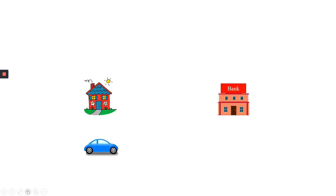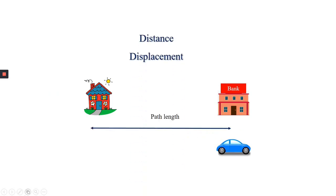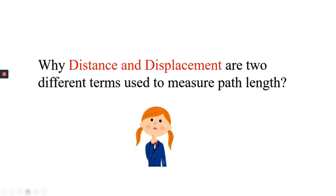In the motion of an object, distance and displacement are the measures of path length. But why? Distance and displacement are two different terms used to measure path length.